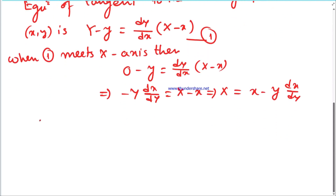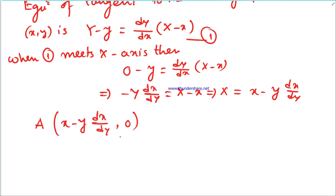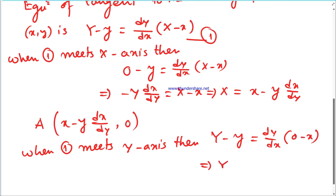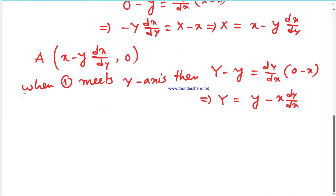Now for the B point coordinate — when the tangent meets the y-axis, capital X equals 0. Substituting into the tangent equation: Y minus y equals (dy/dx) times (0 minus x). So capital Y equals y minus x·(dy/dx). Therefore the B point coordinate is (0, y minus x·dy/dx).